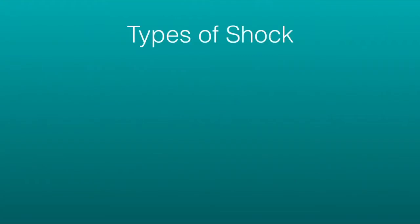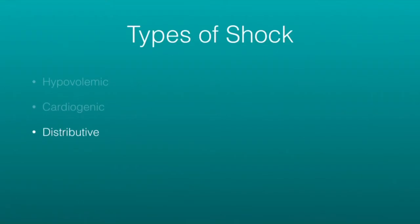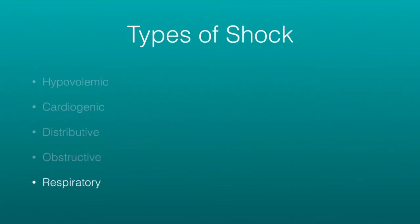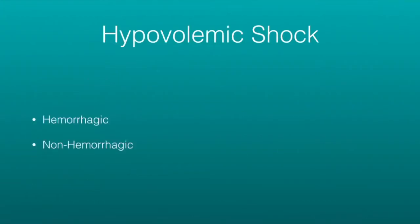The first one is hypovolemic shock, where we lose fluid or have a low volume. The second is cardiogenic shock, due to a problem with the heart. Third is distributive shock, where we have a problem with the blood vessels not sending blood to the right places. Fourth is obstructive shock, when one of the blood vessels gets blocked. And then there's respiratory shock, though respiratory is not really what I think of as a normal shock — it's more of a problem breathing, like an airway obstruction.